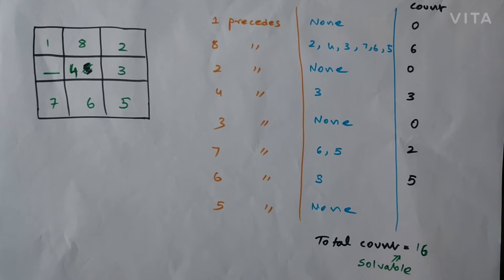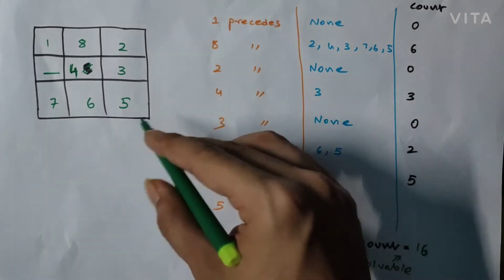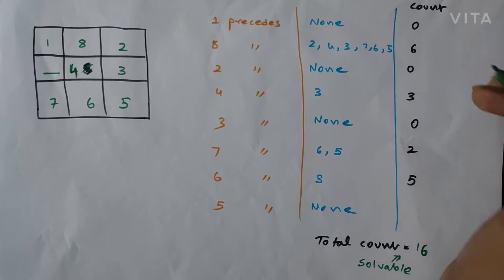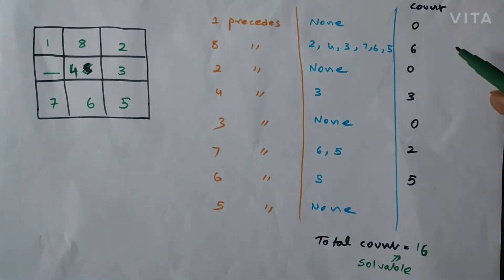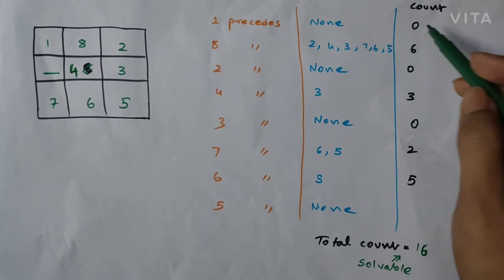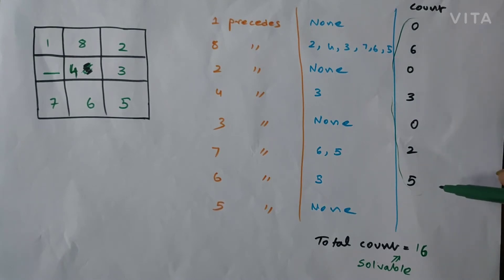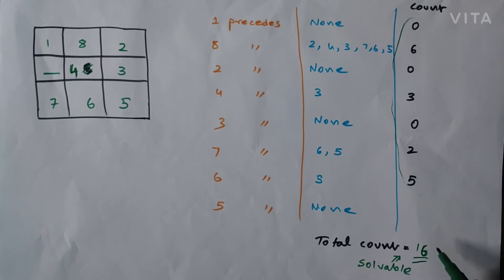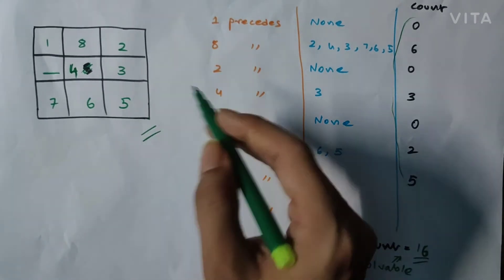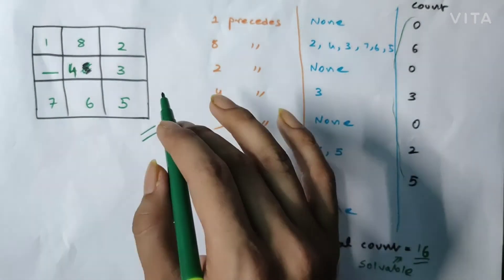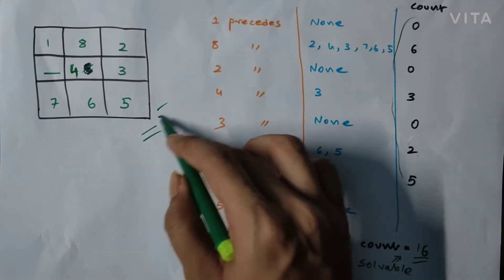Now let us take another problem where the goal state remains the same standard one, but we change the initial state. Using the same method, following the same steps, we find that the total inversion count comes out to 16. Since 16 is an even number, the condition is satisfied — this initial state is solvable using a suitable algorithm.